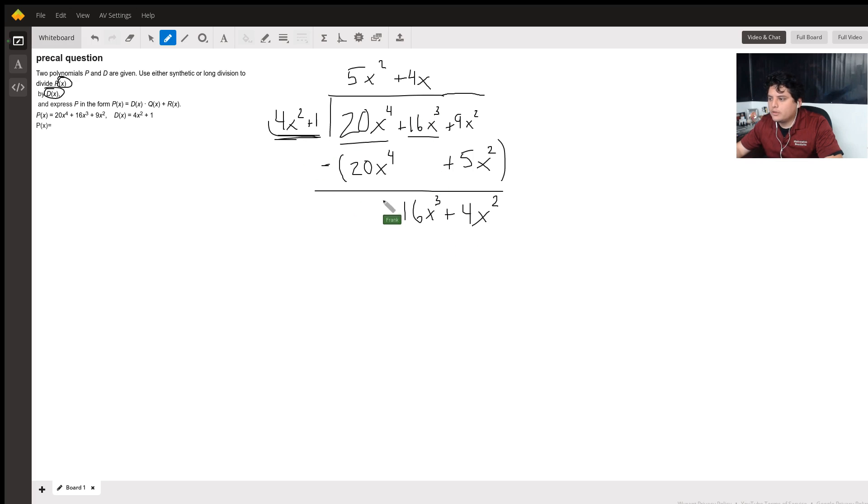4x times 4x squared is going to be 16x cubed. And this is what we're going to be subtracting. Notice how I put it in parentheses so that I know that I'm going to be subtracting whatever multiplication that is.